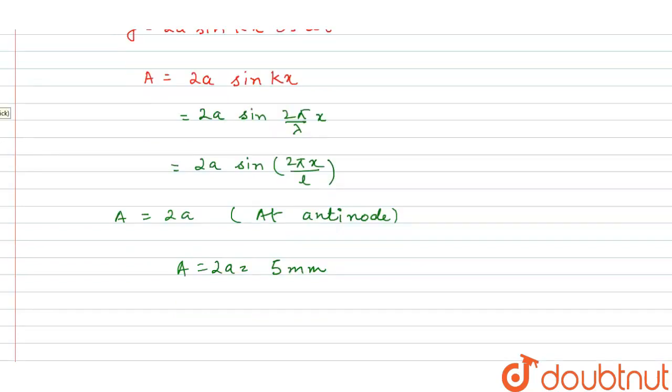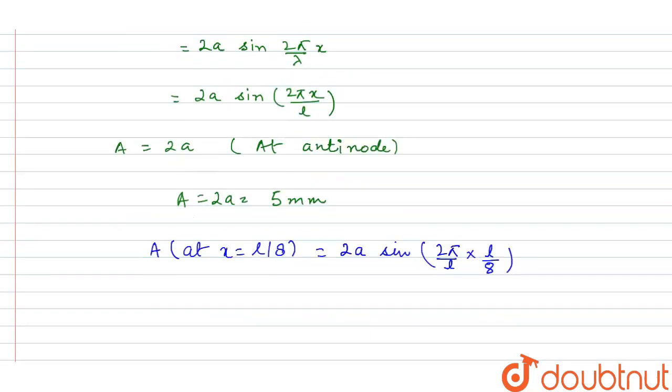Now we have to calculate at L by 8. So amplitude at x equal to L by 8 is equal to 2A sin 2 pi by L, and the value of x is equal to L by 8.